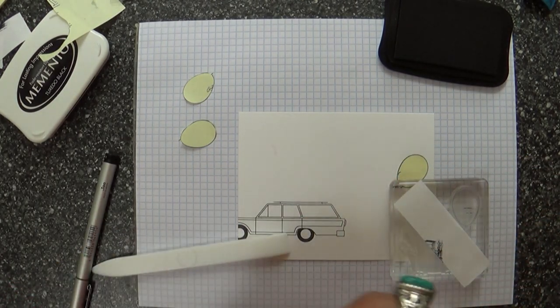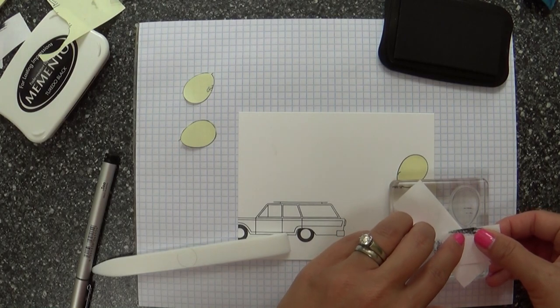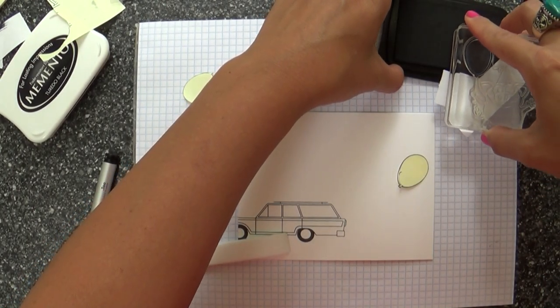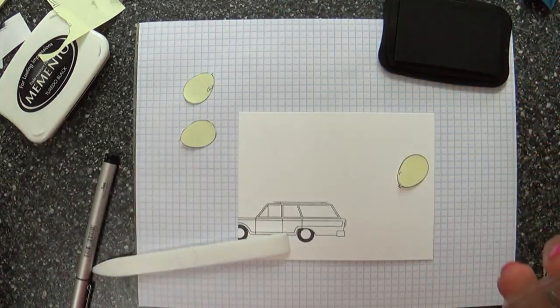But if you want to be really careful not to ink up anything else on the stamp set but the balloon, you can throw some post-it tape or mask it off. Like I'm doing here just to be really careful.